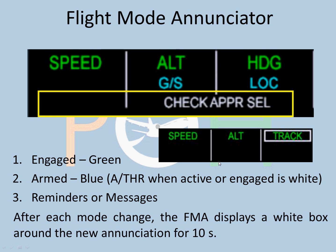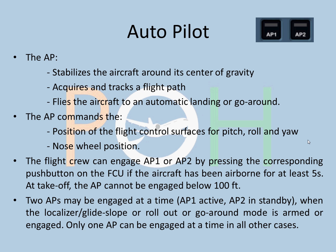An important thing about the FMA is that after each mode change, if there is any change — suppose it changes from heading to track — the FMA will display a white box around the new annunciation for around 10 seconds, so that the pilot knows something has changed in what the aircraft is doing. That's all about FMA; you will learn more with experience.